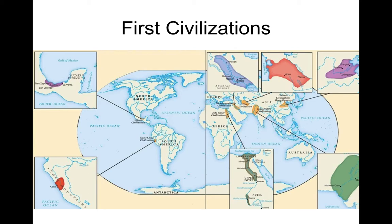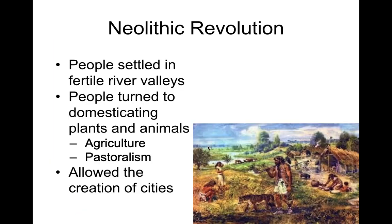That's everything for the start of humanity up to the point we're about to dive into in history. Hopefully you got everything — if you missed something, go back and rewind to where you need to. This should help you understand how we got to where we're really starting things off. Before we dive into Egyptian and Mesopotamian civilizations, we're going to look more at the Neolithic Revolution that we just talked about here — we'll discuss that some more in the coming days.